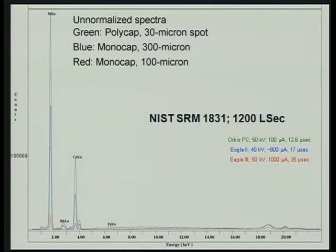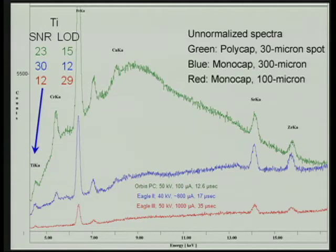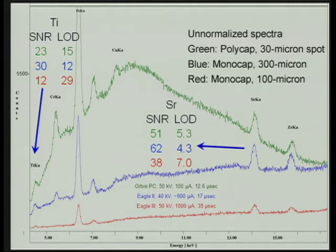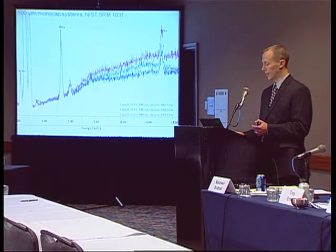Here are unnormalized spectra from those three systems — SRM 1831 for 1200 live seconds. You can see the poly-cap has a lot more signal than the other two, and the 100 micron mono-cap has significantly less. Expanding to that region, you see the same increased intensity and also increased background. To compare these systems, you look at their LODs — here are titanium's signal-to-noise ratios and LODs for those spectra, then for strontium. The next slide shows three very similar 100 micron mono-cap systems where the only difference is the green trace was collected for 1800 live seconds instead of 1200. The LODs for titanium and strontium are fairly similar from one system to another, as you would expect.